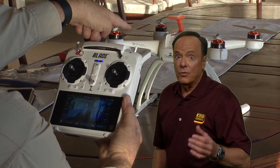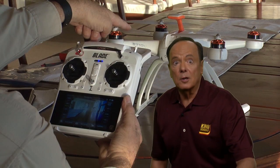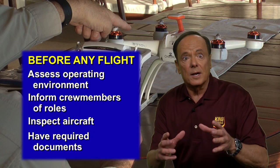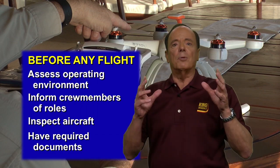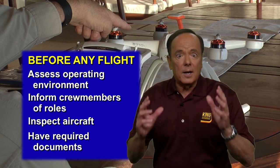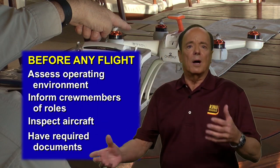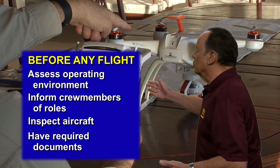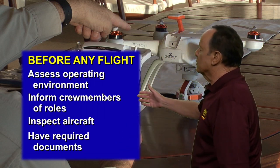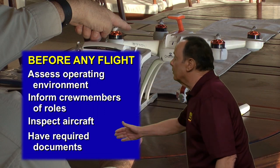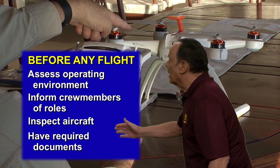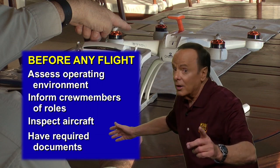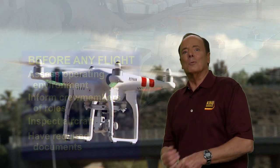A little thinking in advance will help you manage risks and comply with the regulations. So before beginning a flight, you should, as the remote PIC, first assess the operating environment, inform any supporting crew members about the operation and the roles, and inspect the aircraft to make sure that it is in a condition for safe operation. You should also have readily available all the required documents in the event of an on-site FAA inspection.